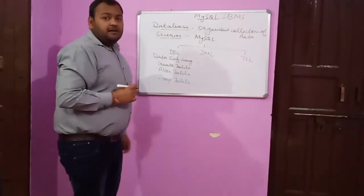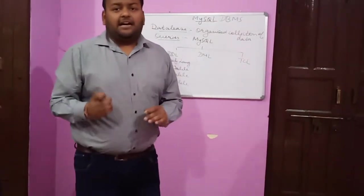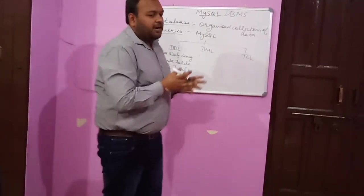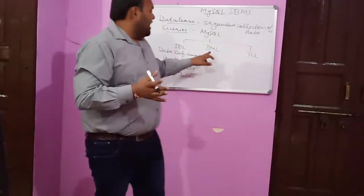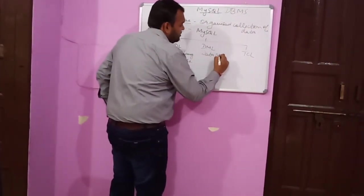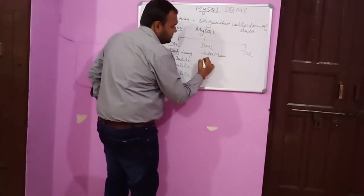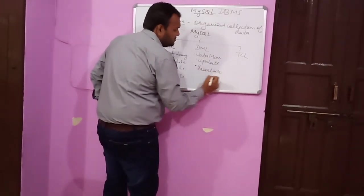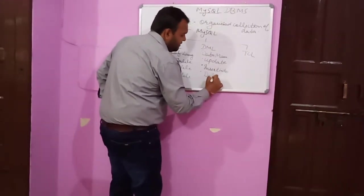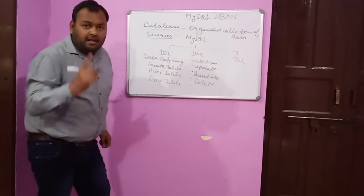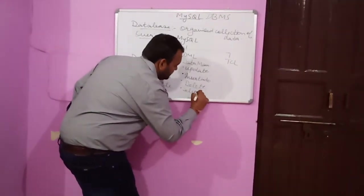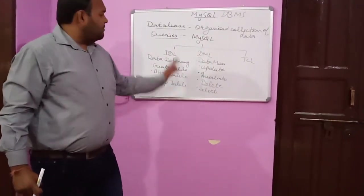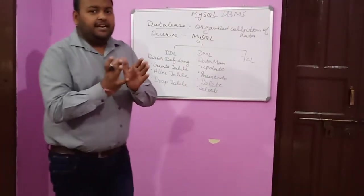Now let me move to DML, Data Manipulation Language. The commands that allow you to perform tasks related to data manipulation — you can keep a check on records, you can enter various data. In DML we have three commands: number one is UPDATE, number two is INSERT INTO, and number three is DELETE. There is one more command to categorize in DML, which is the SELECT command. Whether SELECT is a DML command or a DDL command — it is considered a DML command.